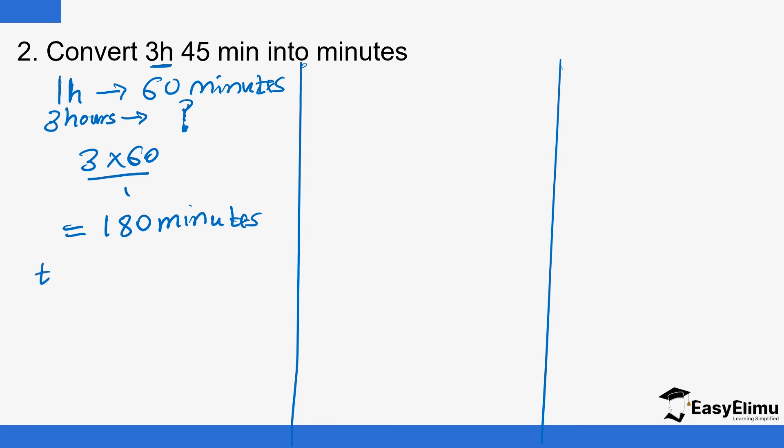So total time in minutes should be 180 plus 45, which equals 225 minutes. Therefore, 3 hours 45 minutes equals 225 minutes.